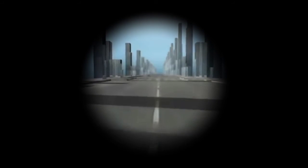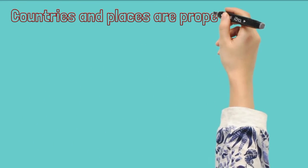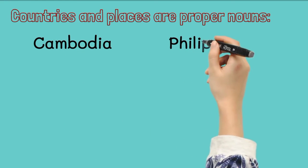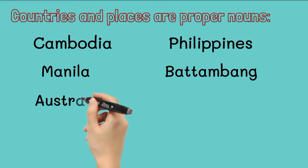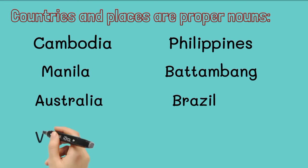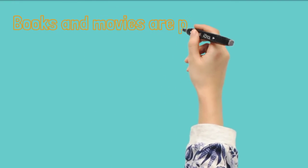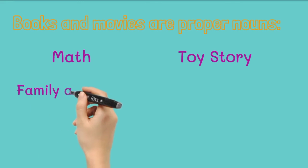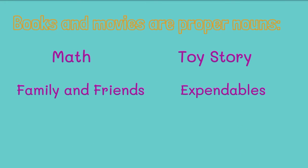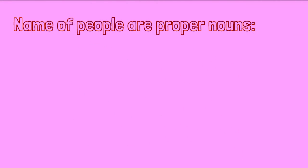This time, I will give you some examples of proper nouns. Countries and names of places are proper nouns, so the first letter should be capitalized. Likewise, the title of a book or film is also capitalized. And the names of people are proper nouns, so they should be capitalized as well.